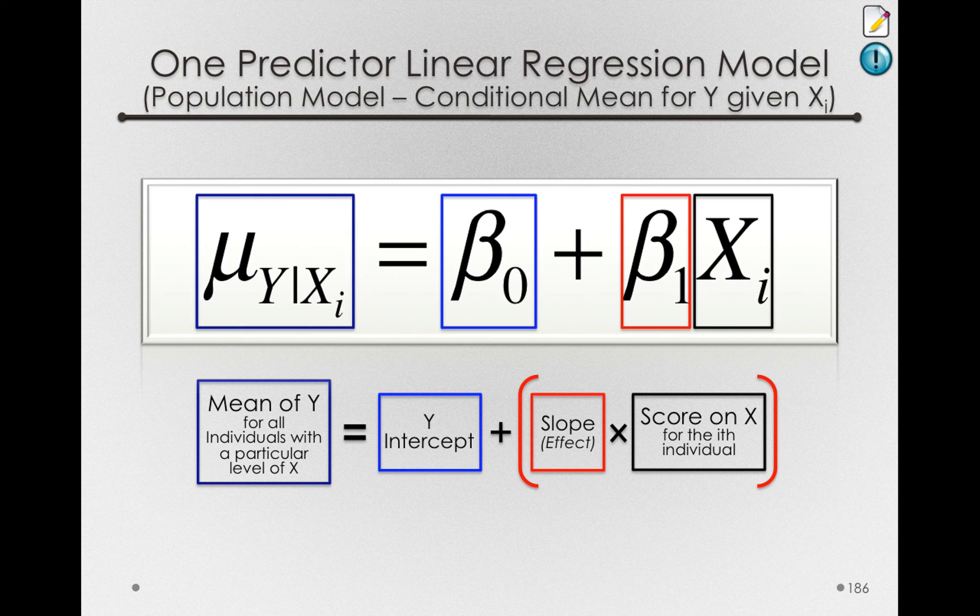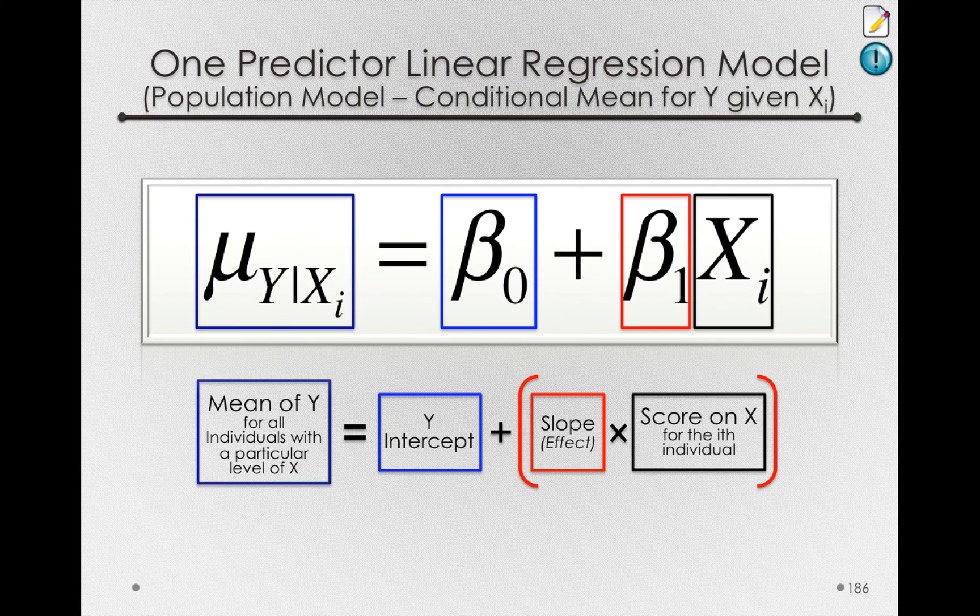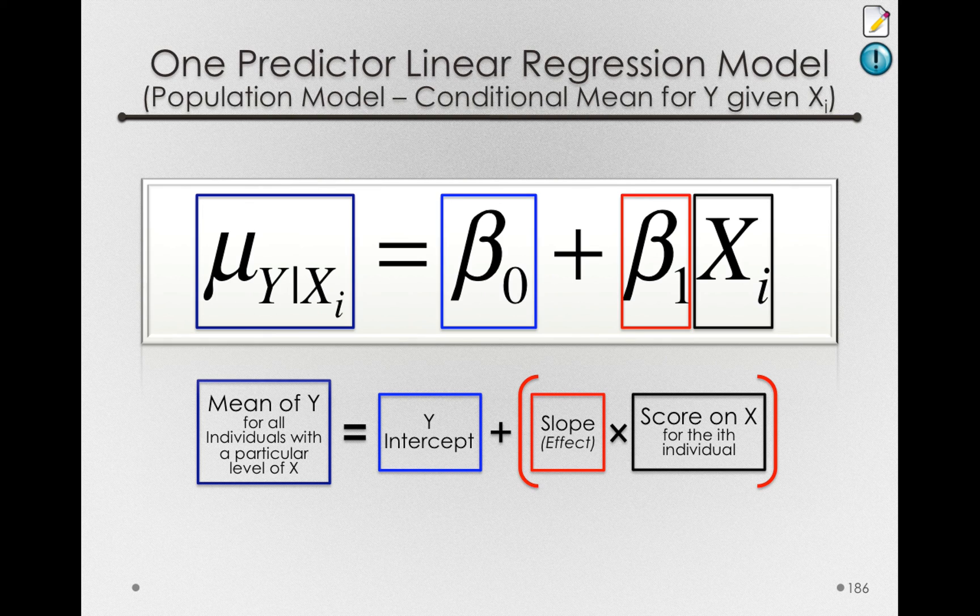Notice that this model does not have an epsilon sub i. So we're not talking about individuals' actual scores, but rather the mean of all individuals who have a particular level of x.